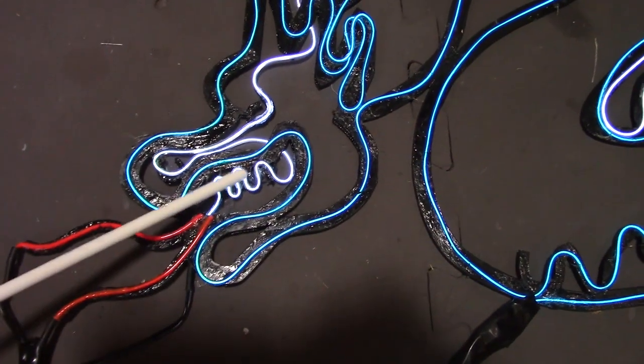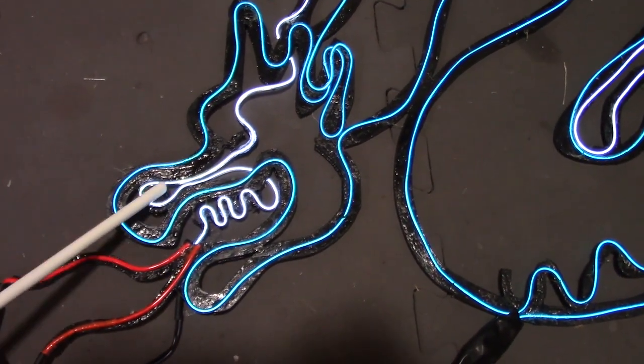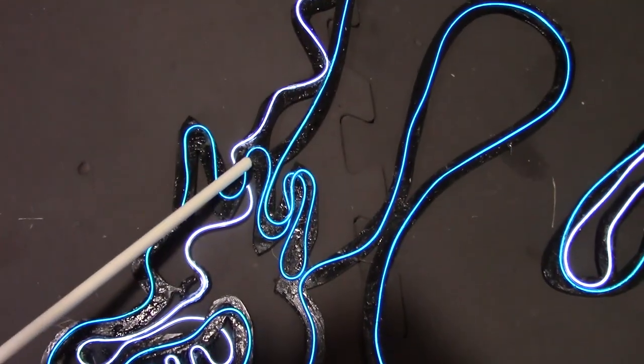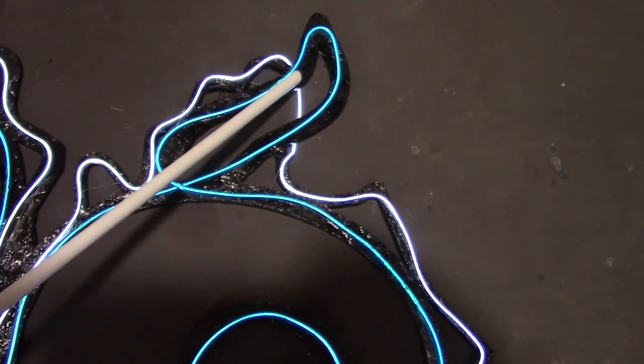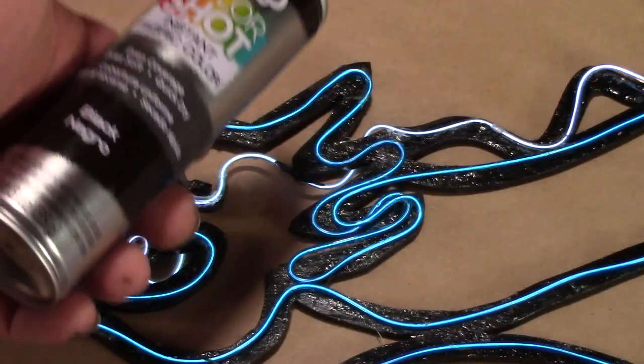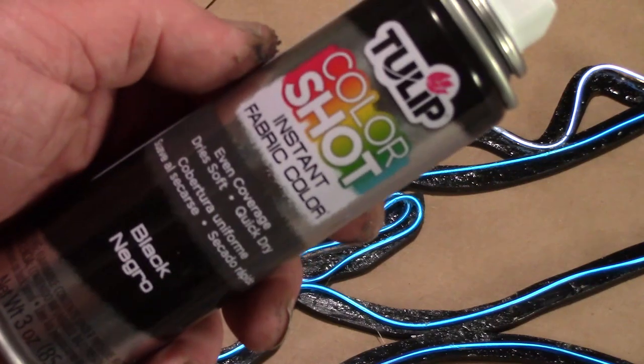There are four areas that need light block: after the teeth and before the snout, after the snout before the eye, after the eye and before the first spike. And then one more light block between the tail. We can do this light blocking either with electrical tape or fabric paint. I like fabric paint.